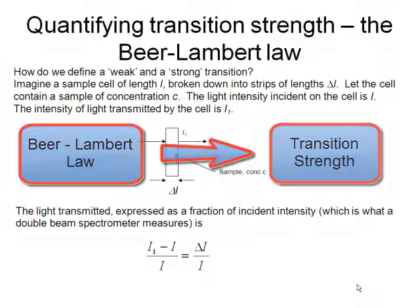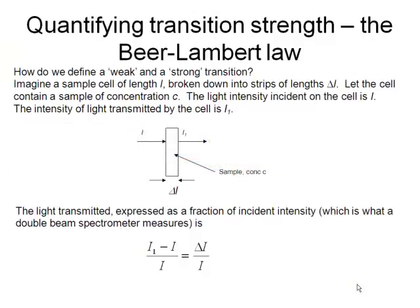That will allow us to say more precisely what we mean by a weak transition or a strong transition. So we're going to derive the Beer-Lambert law.